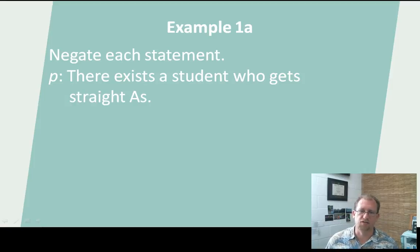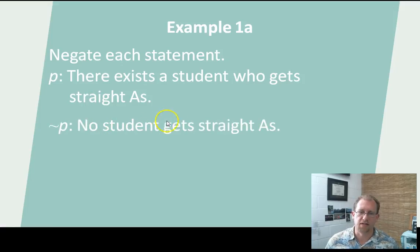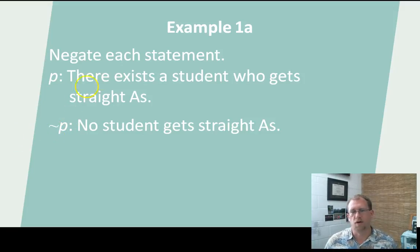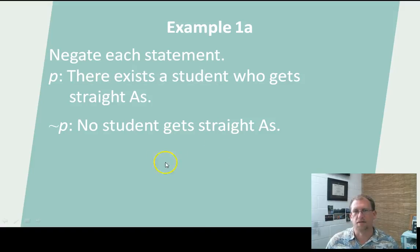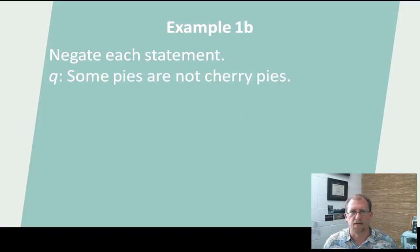Let's do some examples. If the statement is 'there exists a student who gets straight A's,' then we want to negate that statement. Statement P is: there is a student somewhere who gets straight A's. Not-P would be something like: no student gets straight A's, or there does not exist a student who gets straight A's. We want to make sure that as we're negating, if it has a qualifier like 'there exists,' it's best to keep that wording in the resultant statement along with the negative.